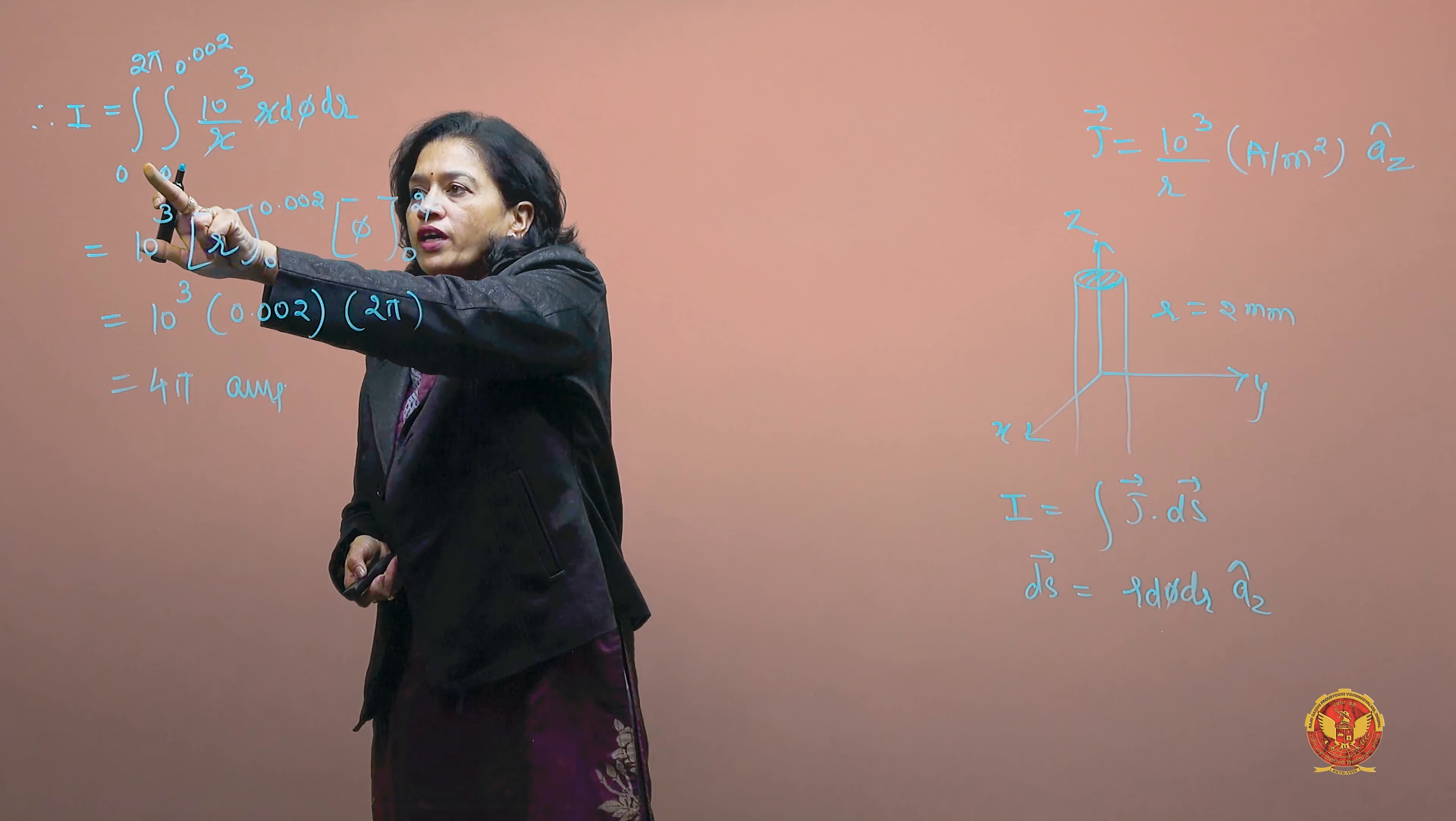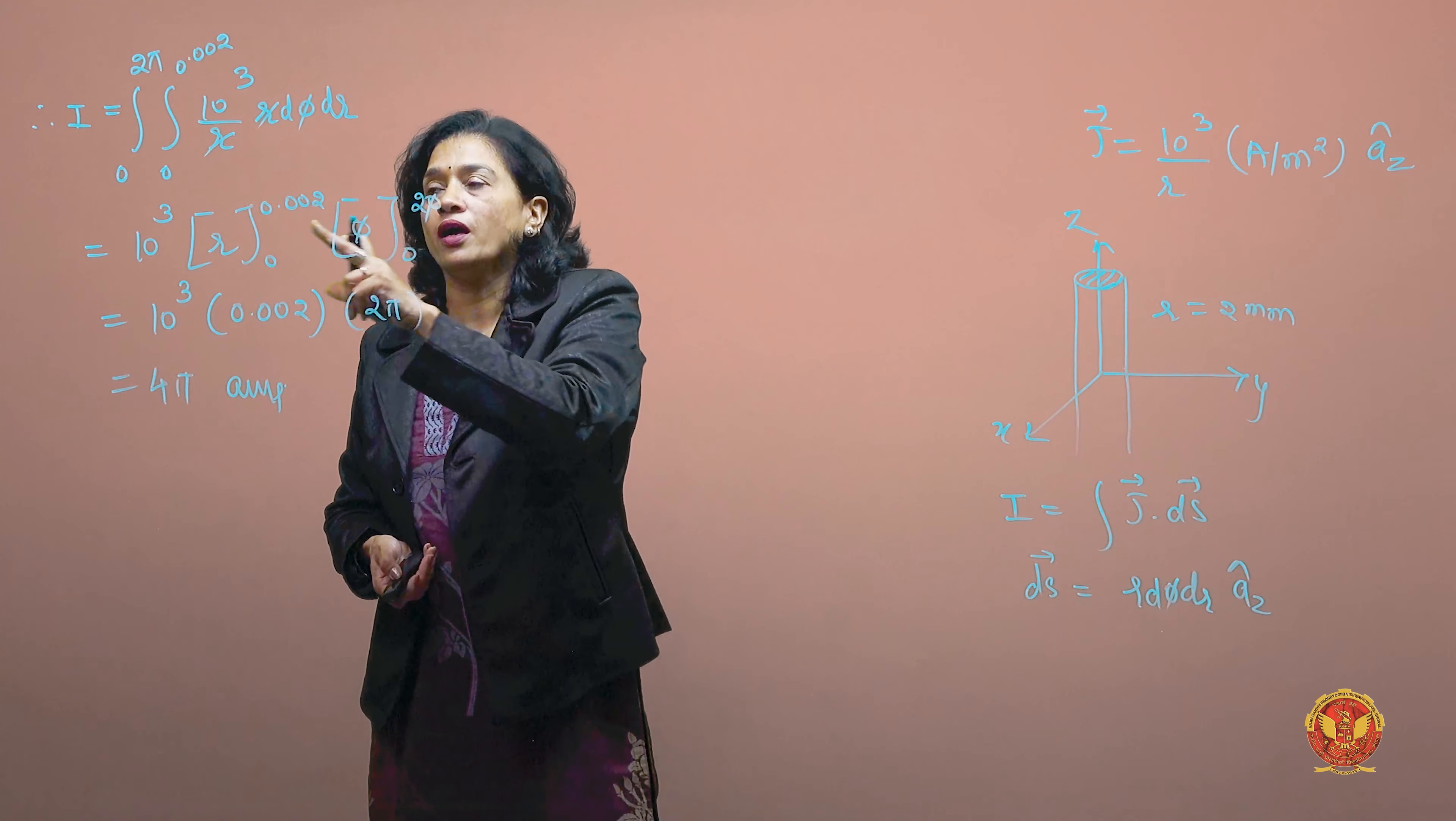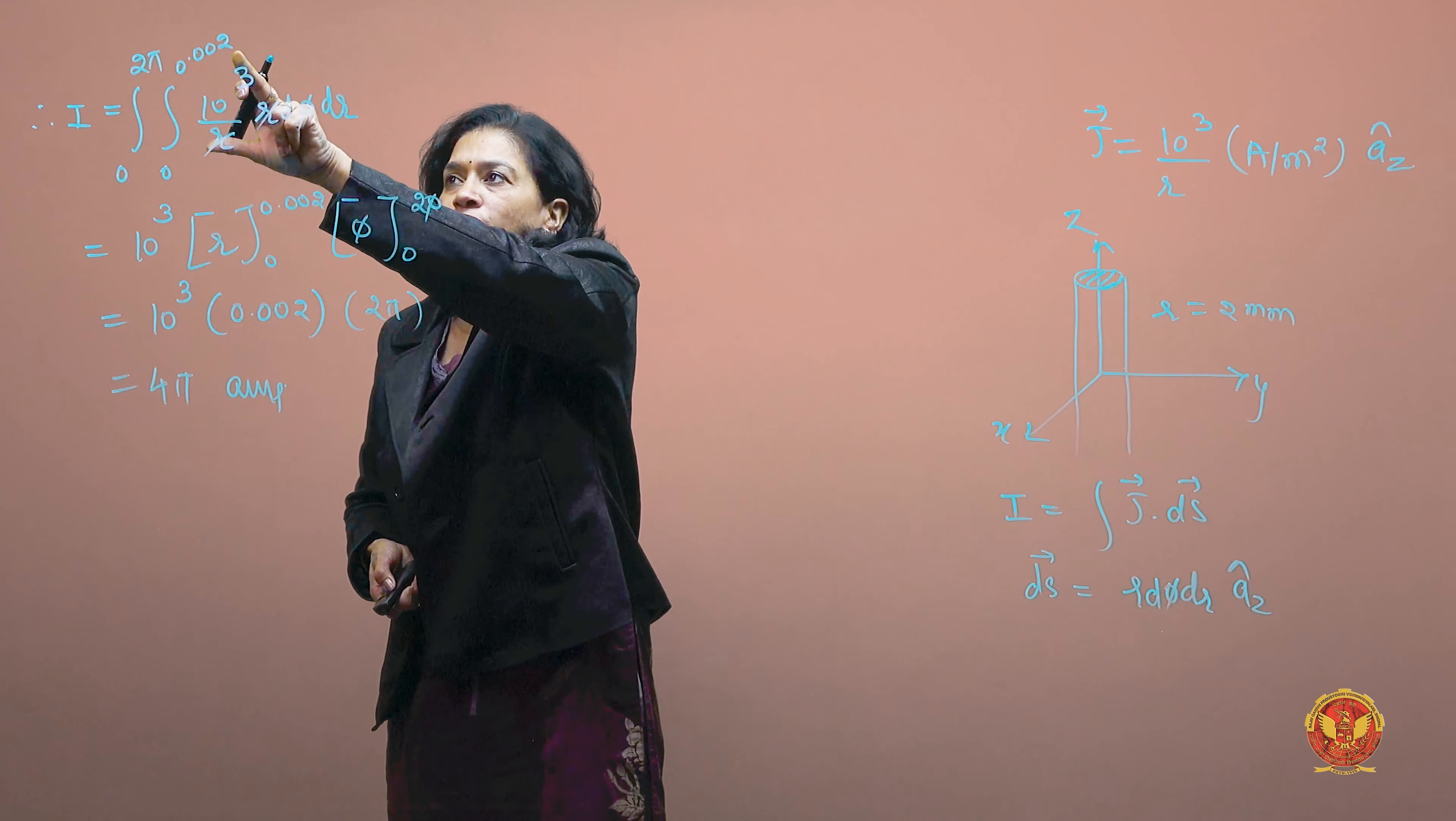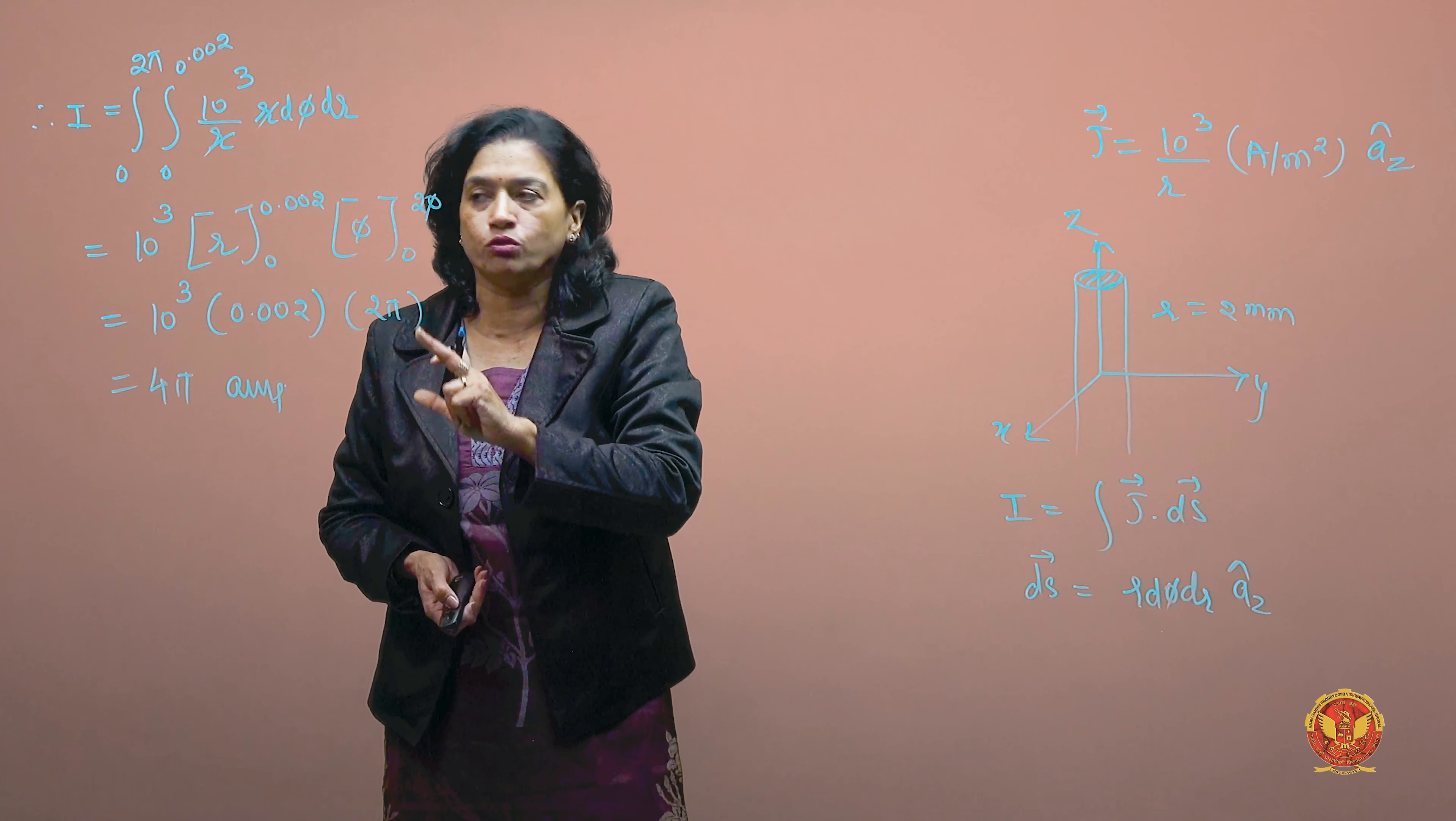The limit for φ is 0 to 2π because we are checking the whole circumference, and r is 2 mm which we take in meters as 0.002, so the limits are 0 to 0.002.